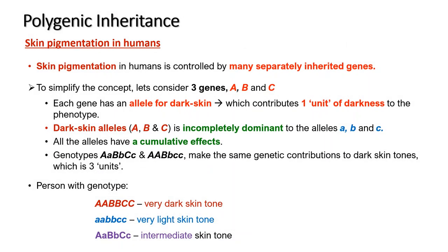A closer look at skin pigmentation as an example: skin pigmentation in humans is controlled by many separately inherited genes. To simplify the concept, we consider 3 genes — A, B, and C. Each gene has an allele for dark skin that contributes one unit of darkness to the phenotype. The dark skin alleles are capital A, capital B, and capital C, which are incompletely dominant to alleles small a, small b, and small c. All these alleles have a cumulative effect.